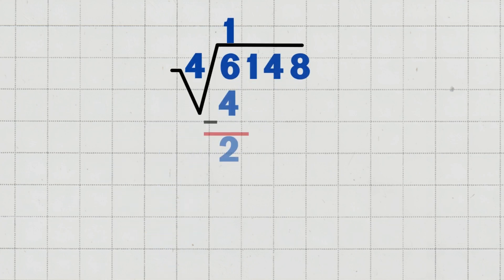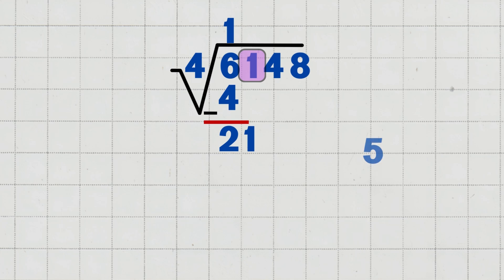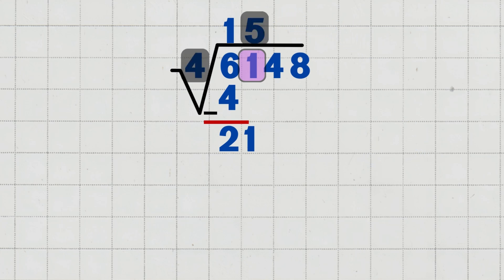Step three: bring down the next digit, one. Bring down the one, making the new number twenty-one. Twenty-one divided by four equals five, since four goes into twenty-one five times. Write five in the quotient above the one. Multiply five times four, which equals twenty. Subtract twenty-one minus twenty, which equals one.